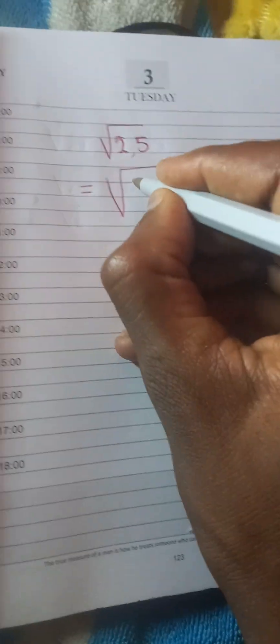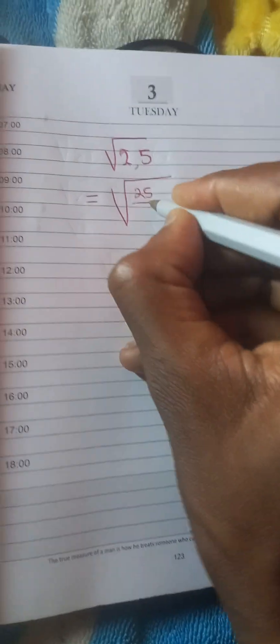So this is what you do. You express this 2.5 as a fraction. So 2.5 as a fraction is 25 over 10.